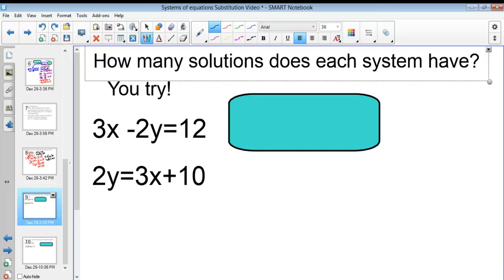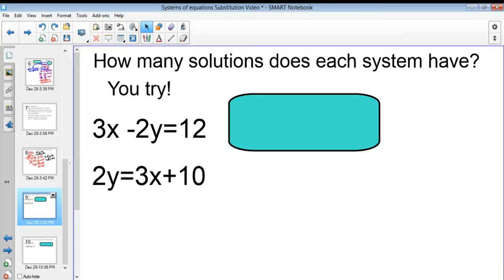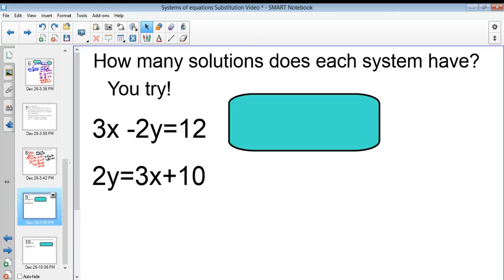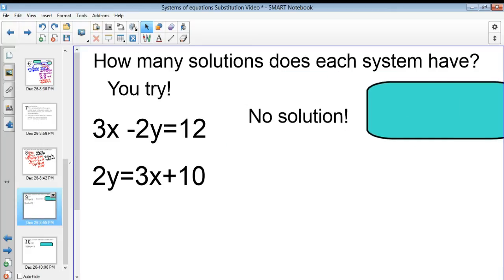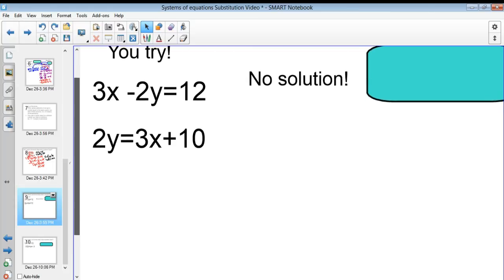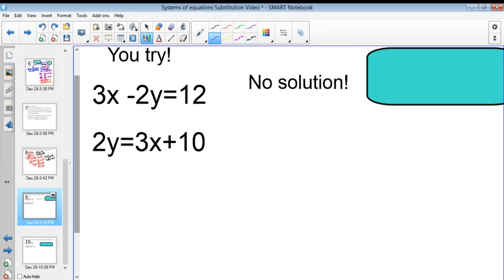So, go ahead and try one. Pause the video. And when you're done solving, check here for the answer. So, the answer for this one is no solutions. If you got it, fast forward. If not, I'll walk you through. This one doesn't have as nice of one to solve for instantly. But it is pretty easy still to solve for y here. All I have to do is divide both sides by 2. So, that leaves me with y equals 3 halves x plus 5. Now, with this, all I have to do is plug it back in.